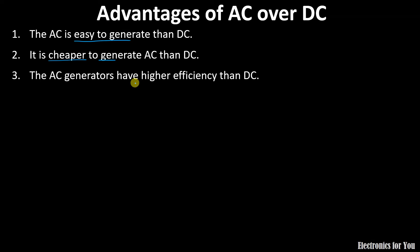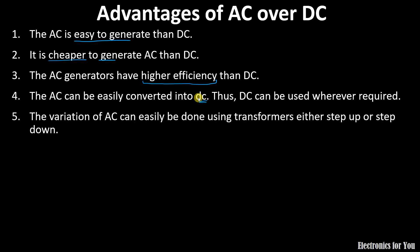The AC generators have higher efficiency. This is one of the most important advantages because AC generators are having higher efficiency than DC. Then, AC can be converted into DC very easily by using a device known as the rectifier. Whereas, the reverse is not very easy.